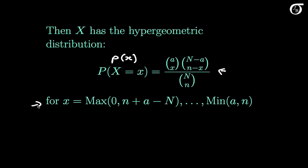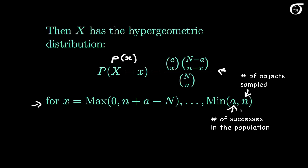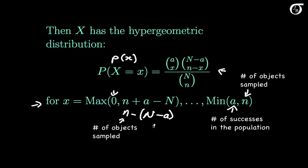What values can x take on? The number of successes can only take on whole number values, and the minimum and maximum are a little bit messy. The number of successes in the sample can't possibly be bigger than the number of objects we are choosing, so it can't be bigger than n, and it also can't exceed the number of successes in the population a. So the maximum value x can take on is the minimum of a and n. As for the minimum, the number of successes can't be less than 0, but it also can't be less than n minus (N minus a). So the minimum value x can take on is the maximum of 0 and that quantity.